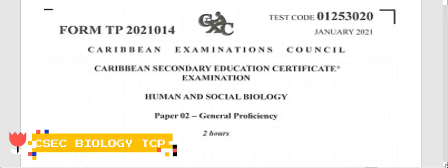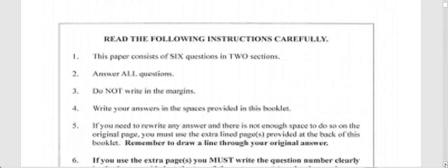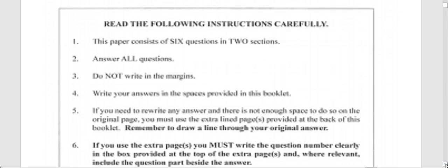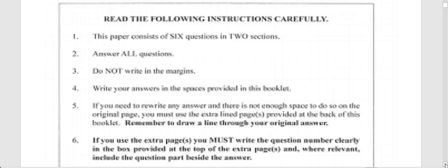We're looking at the January 2021 Human and Social Biology paper, Paper Two specifically. We're going to be doing an overview of the paper as requested by many students. We are going to be doing a part of the paper, and in short order the entire paper will be published, but there's popular demand for the paper so we sent out a part and the rest will come shortly.